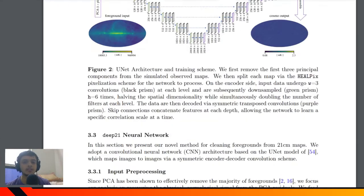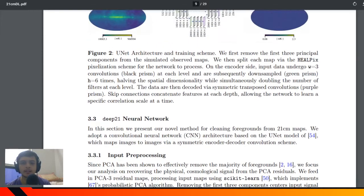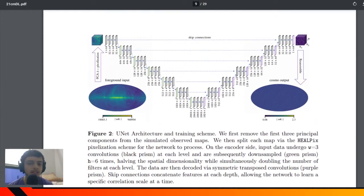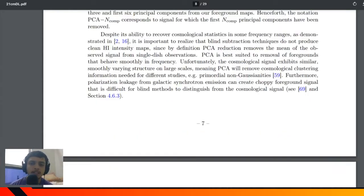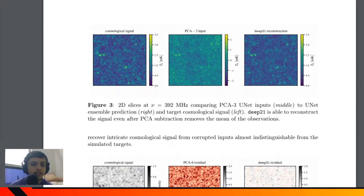Before I get into this U-Net architecture, I would like to show the results of PCA and what the achievements are with PCA. If you see the 2D slice they have chosen, for demonstration purposes 392 megahertz and some random slice. This is the signal that you have, and when you do the PCA you have this.